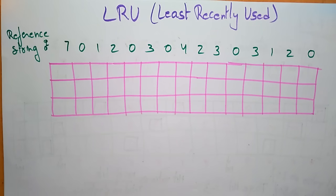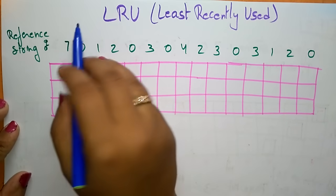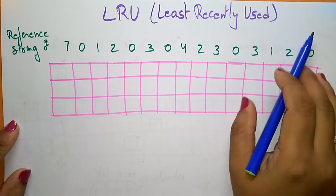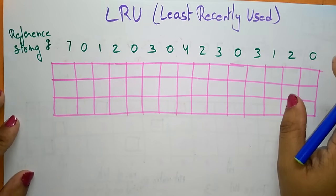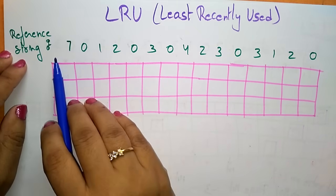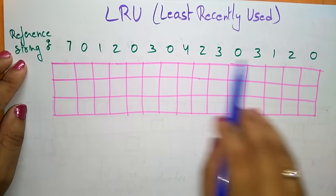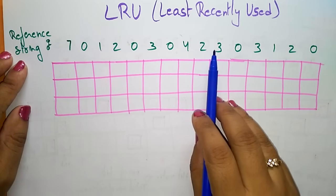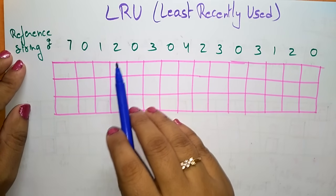Hi students. Coming to the next page replacement algorithm, that is the LRU — Least Recently Used algorithm. In the previous video I explained about the FIFO (First In First Out) replacement algorithm. Now let us see the second technique, that is the Least Recently Used page replacement algorithm. Here I'm taking the reference string — this is the pages that the CPU is demanding.